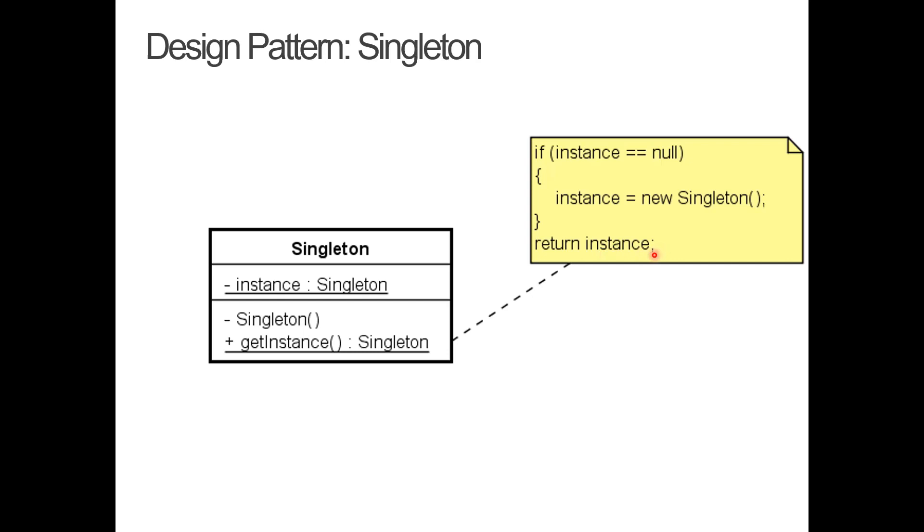On successive calls to getInstance, it is no longer null. So, we just skip this part and we just return this instance. So, that means that all classes or objects that call this method will all get returned the same instance. They now have a reference to the same instance. For example, the same logger class.